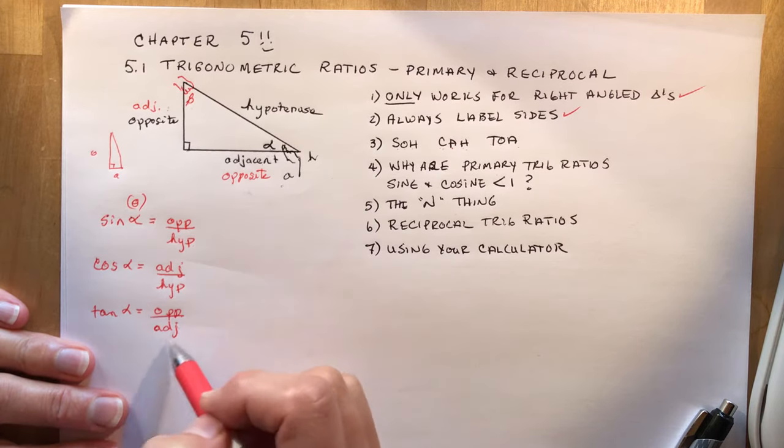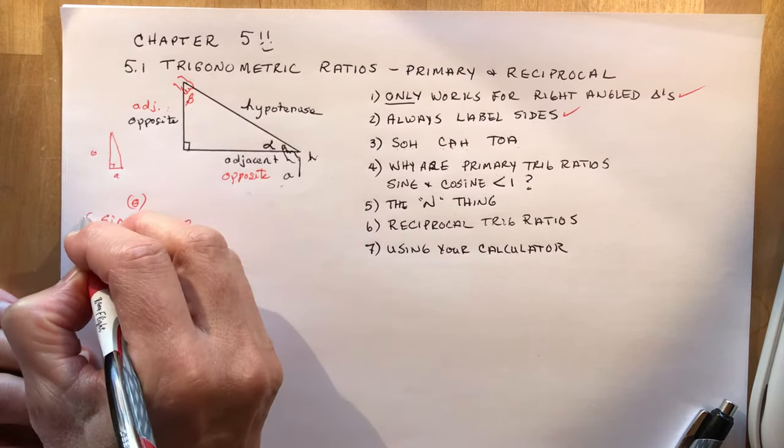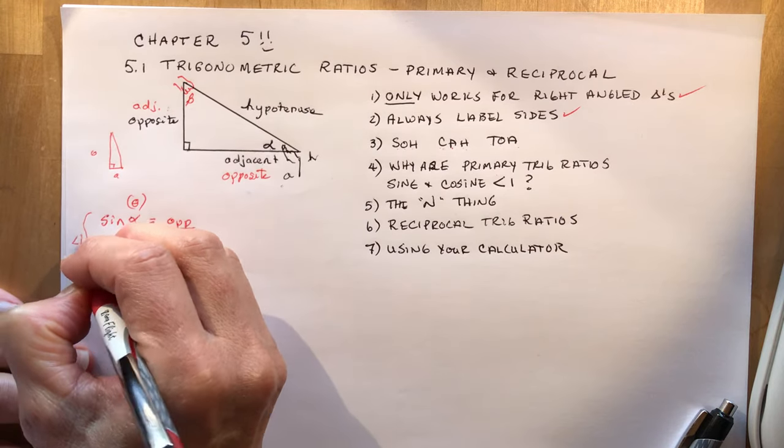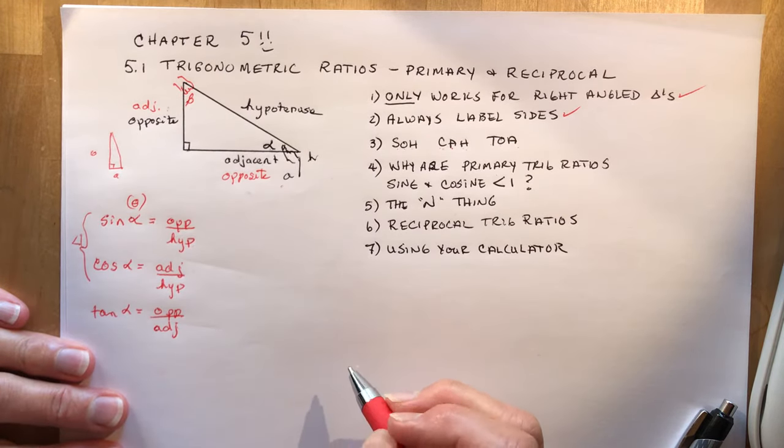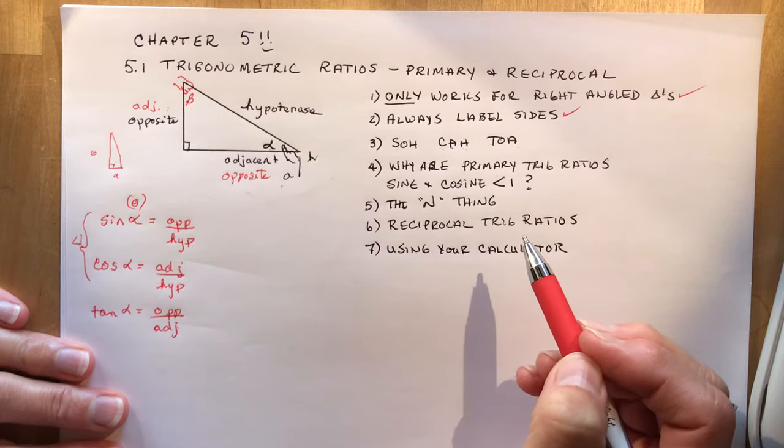So, important that you understand why these two are always less than one. Okay, less than one. But tangent could be different.